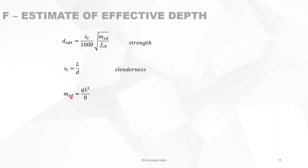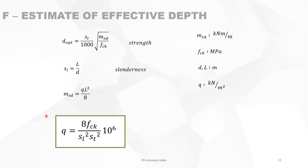We are looking for the maximum uniform distributed load on a simply supported one-way slab. Msd equals QL² over 8. Using units of kilonewton-meter, megapascals, and kilonewton per square meter, and working out the formula for Q — the uniform distributed load — you arrive at a formula that is peculiar: the maximum uniform distributed load submitted to a given slenderness and strength criterion is independent of the span. There is no span in this formula.